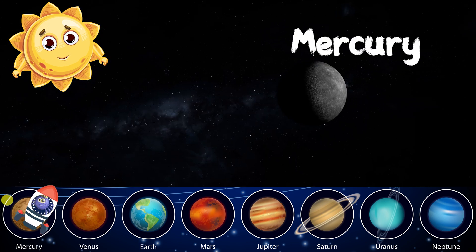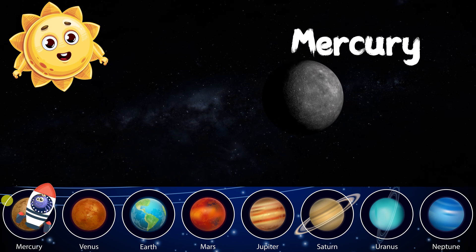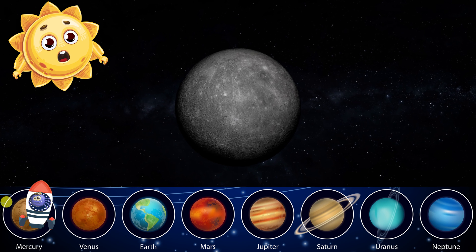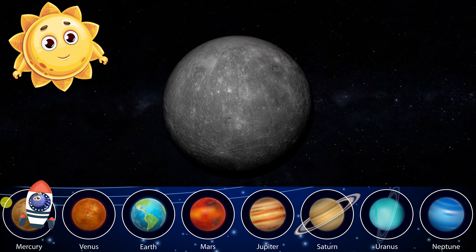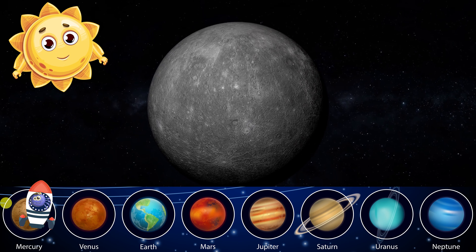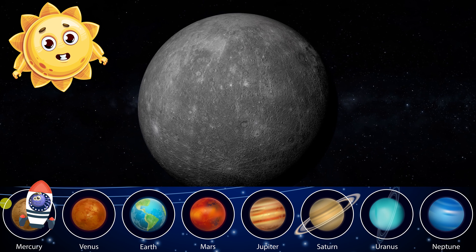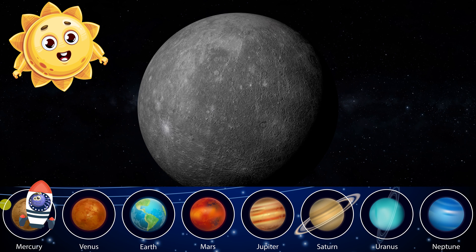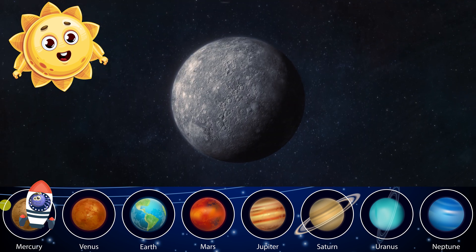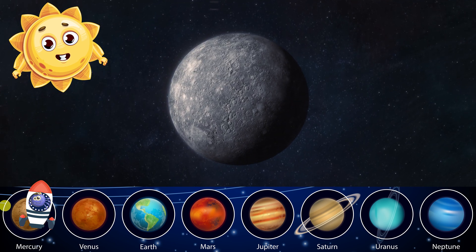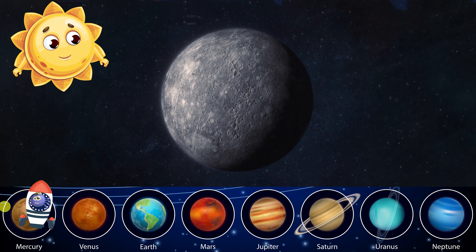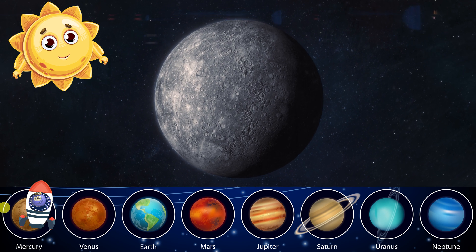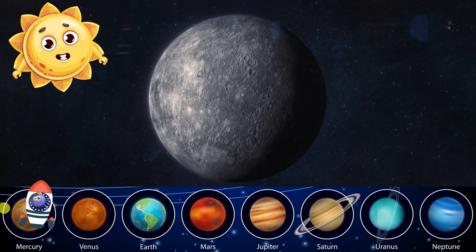Mercury is the smallest planet in our solar system and the closest one to me. It has no moons and no atmosphere. It is very hot on the side facing me and very cold on the other side. Mercury takes about 88 Earth days to orbit around me and about 59 Earth days to spin on its axis. That means one day on Mercury is longer than one year on Mercury. Wow! I thought yesterday was a long day, but it wasn't longer than a year. Yeah, Earth days are a good length.